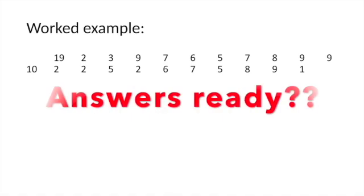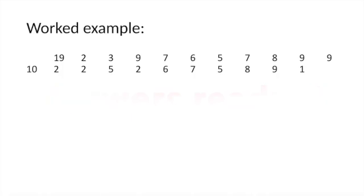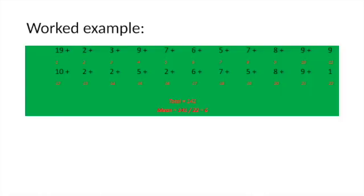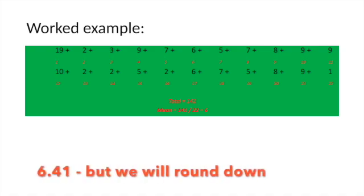Right. You should be back in and have an idea of the answers in front of you. So, let's work through the mean first. So, to do that, we're going to get the total. So, add them all together. The total comes to 141. And then we divide it by 22, which works out as 6. And hopefully you've all got that answer.